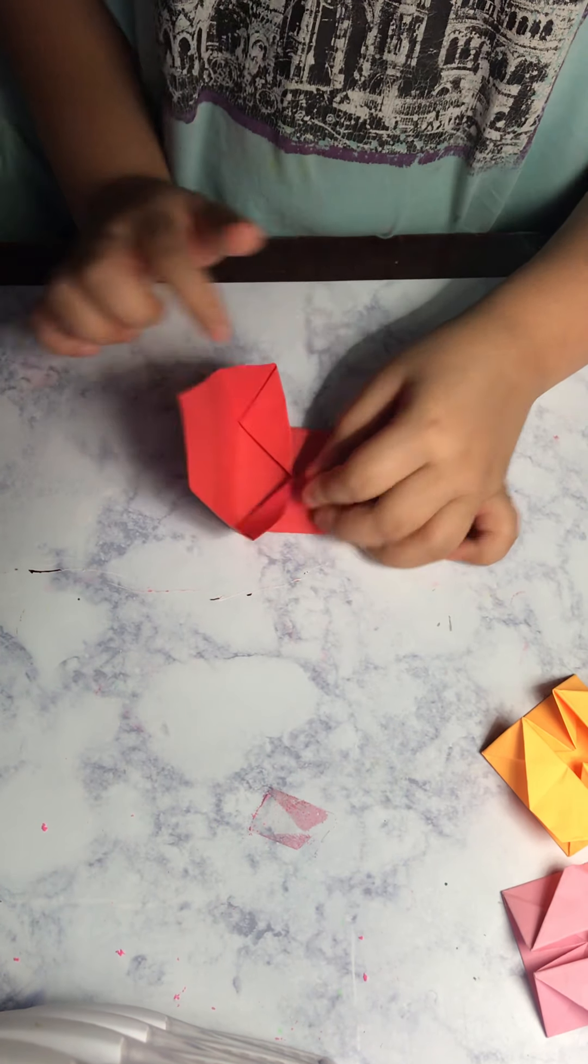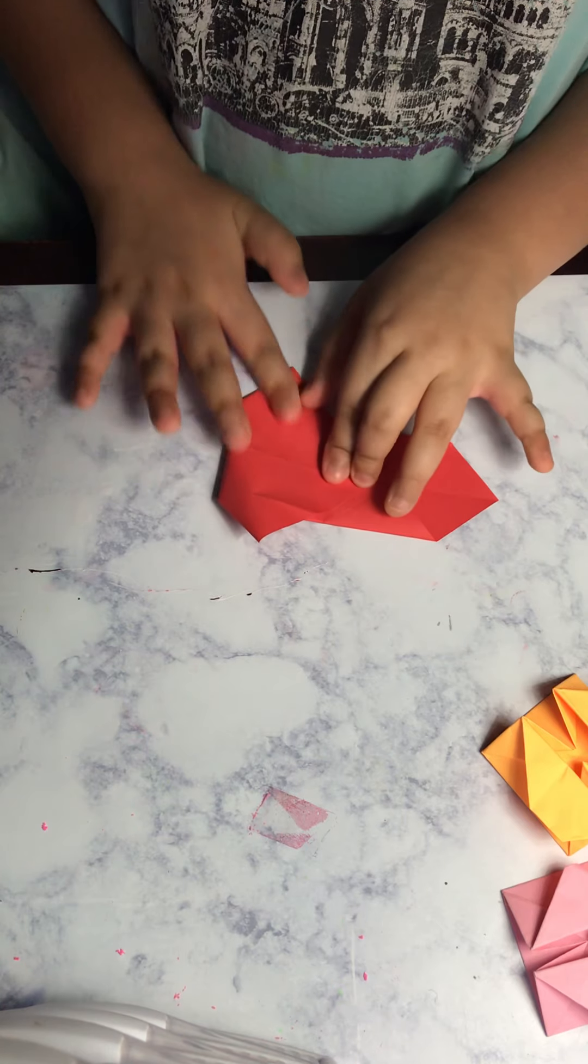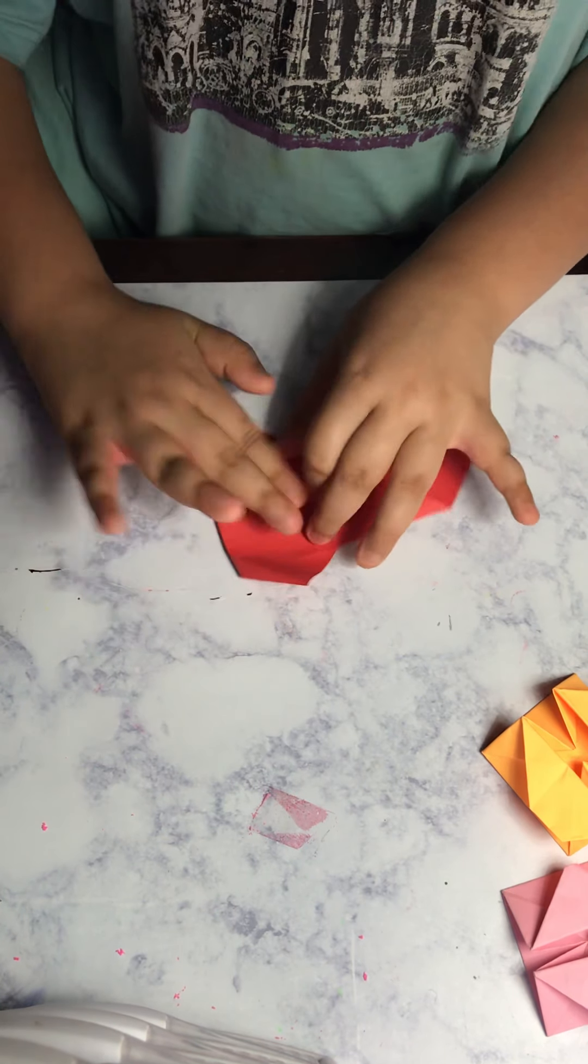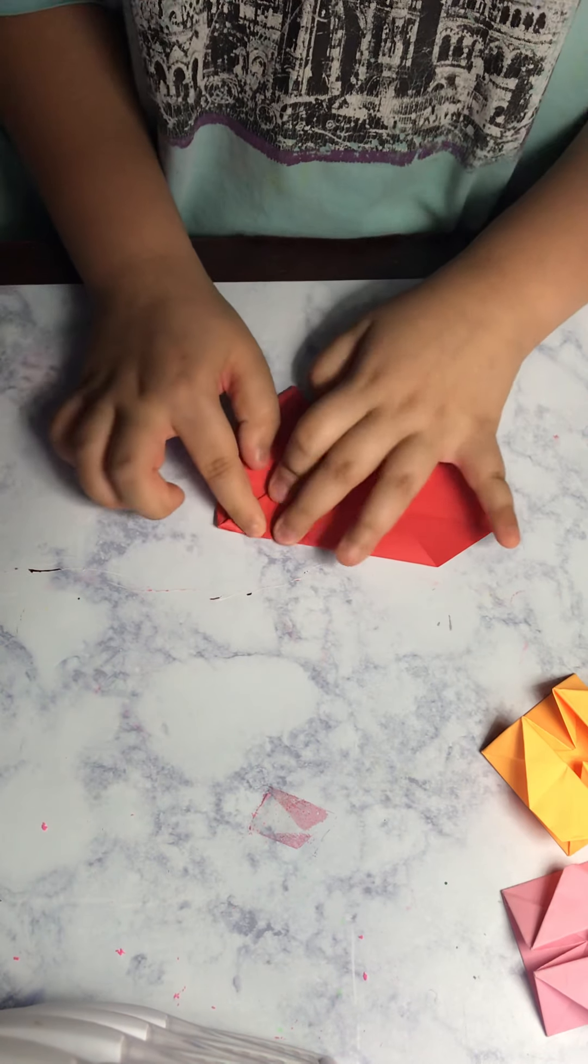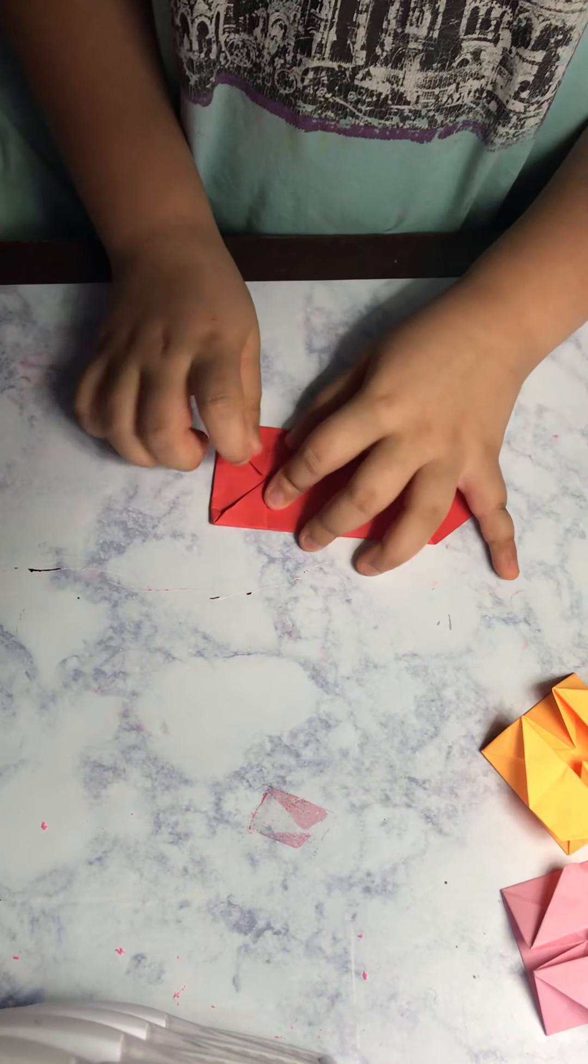Then you have a flap right here. Fold that over there. And you take this corner and fold it to the middle. Same thing on the other side.